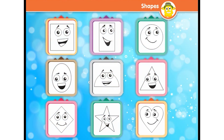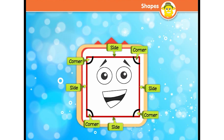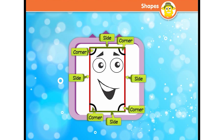Now let us learn about different shapes through a riddle. I have four sides and four corners and all the sides are equal in length — who am I? I am a square! I have four sides and four corners, but two sides of mine are short and two sides are long — who am I? I am a rectangle!